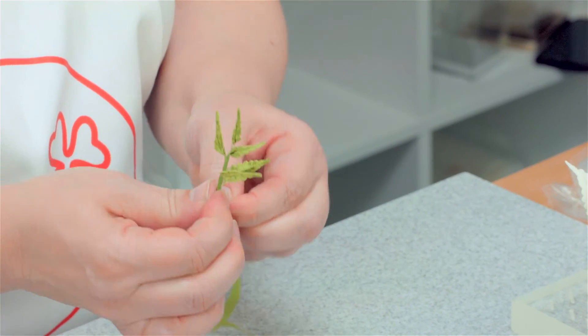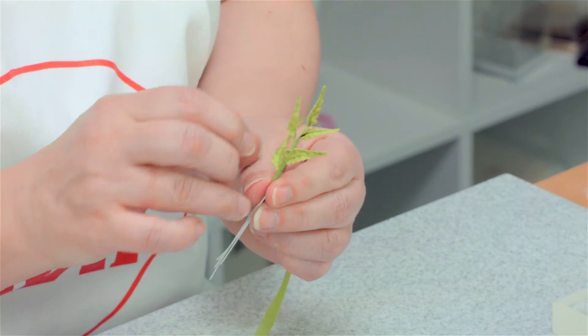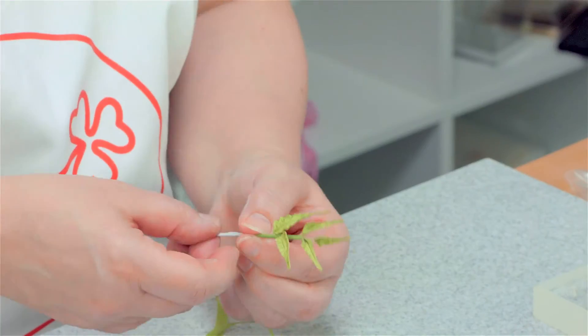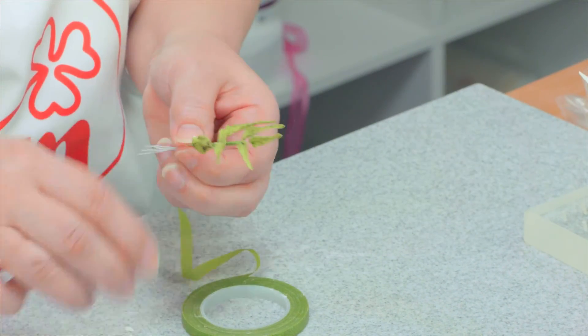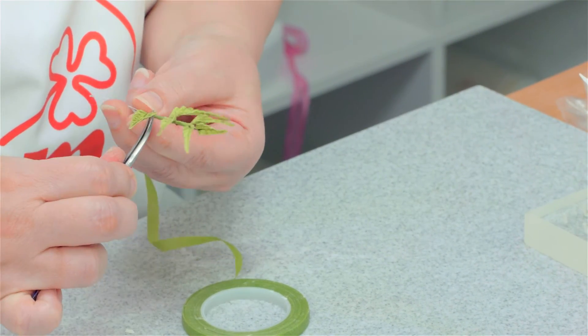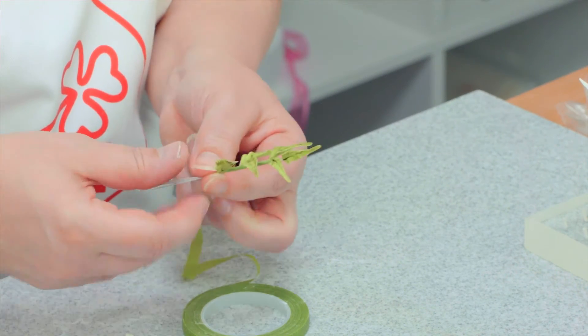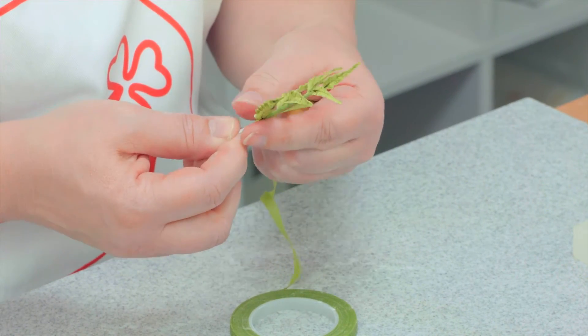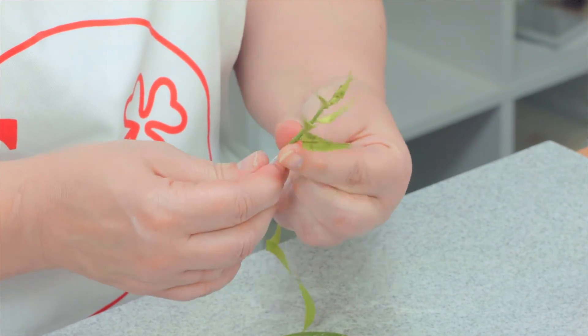If you find the main stem is getting too thick you can cut off some of the wires. If it's feeling that the whole stem is moving too much, it's not strong enough, you could tape in a 24 gauge wire to strengthen it. But you just keep adding these fronds in the same way, alternating them from side to side until you get the fern to the length that you want it.